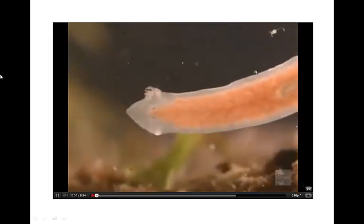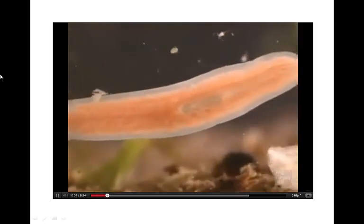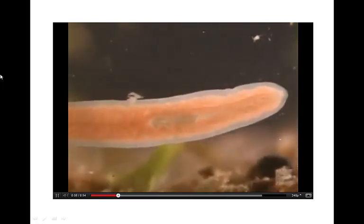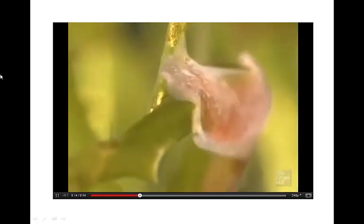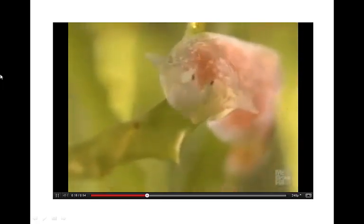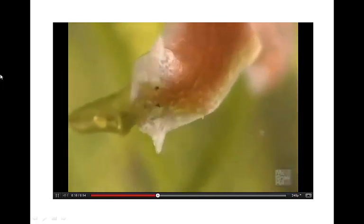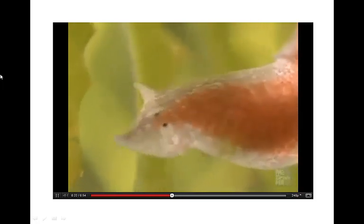It is in flatworms like planaria that we first see bilateral symmetry and cephalization — the localization of the sense organs in the head region. A pair of ocelli, which are light-sensitive eye spots, are located toward the center of the head. Lobes extending from either side of the head contain chemosensory cells.